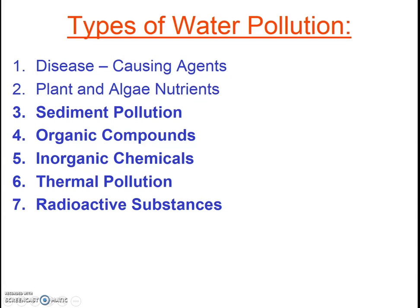In this second video clip, we're going to go through the remaining five types of water pollution. As a reminder, you should be able to define each type, note some examples, identify some sources — ideally both point sources and non-point sources — talk about the impacts of this sort of pollution, and then think of ideas for how we could reduce this sort of pollution.